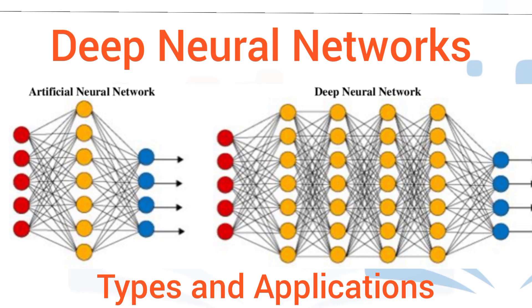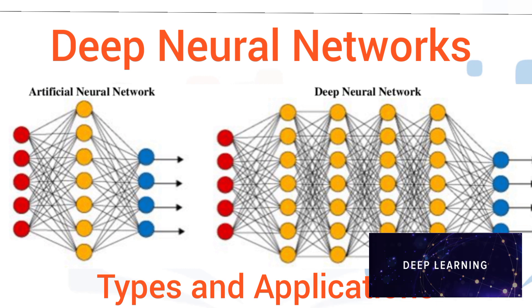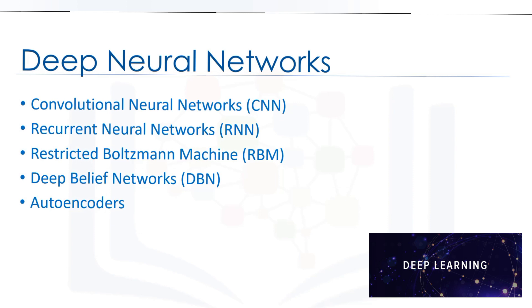Hello and welcome. In this video we will provide an overview of several deep neural network models and their applications. To better understand deep learning, let's first take a look at different deep neural networks and their applications, namely convolutional neural networks or CNNs, recurrent neural networks or RNNs, restricted Boltzmann machines or RBMs, deep belief networks or DBNs, and finally autoencoders.